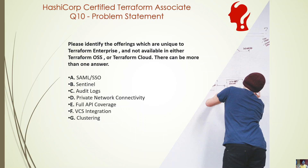Sentinel is offered in Terraform Cloud only. Full API coverage is offered in Terraform Cloud only. VCS integration is offered in Terraform Cloud only. These are not things exclusive to Terraform Enterprise. Everything offered in Terraform Cloud is already included in Terraform Enterprise. The free plan has certain features; the team plan adds more; the team and governance plan adds a bit more; and Terraform Enterprise includes all of that plus additional enterprise features.